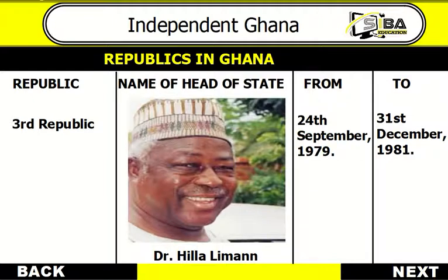The military ruled until 1979, when power was given back to a civilian government and the Third Republican Constitution was established. Two years later, Dr. Hila Lehman's government was ousted out of power by Jerry John Rawlings, ending the Third Republic. And so, rolling along the route until we were ushered to the Fourth Republic.